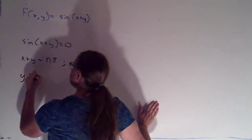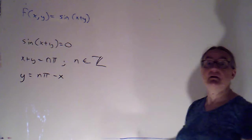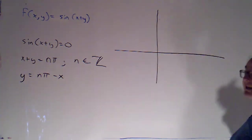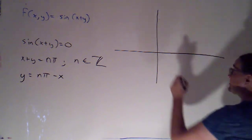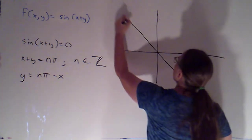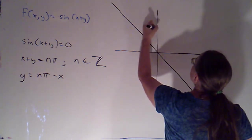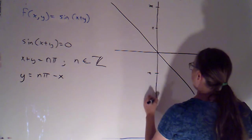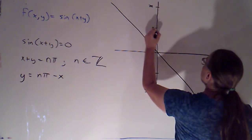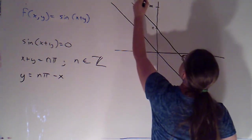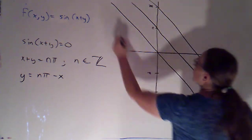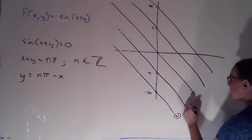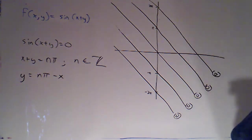Now, if I solve for y, that's going to mean y = nπ − x. That gives me a line with slope negative 1 and y-intercept equal to a multiple of π. So I'm going to be getting a whole bunch of parallel lines. If n = 0, the y-intercept is 0 and we go through the origin with slope negative 1. Then at π and 2π, and negative π and negative 2π, I have parallel lines with those as my y-intercepts. All of this is my level curve for k = 0.